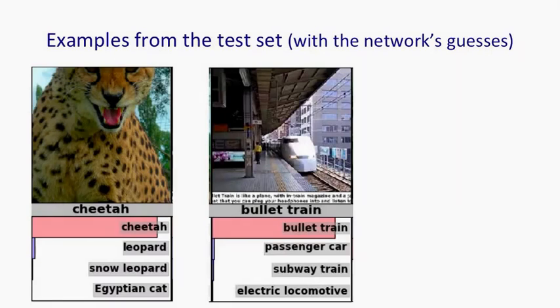Here's an example the other way around: there are many objects in the image, and the object of interest is only a very small fraction of the pixels. The network correctly says 'bullet train', but also has other bets like 'subway train' or 'electric locomotive', which are pretty sensible. Looking at the image, there are lots of other things that could be labelled — the roof, the pillar supporting the roof, a pedestrian, or the large apartment block in the background.